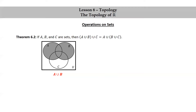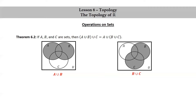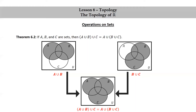For B union C, we shade both B and C. Coming from the left, if we take A union B and then union that with C, we proceed by shading in the rest of C. And if we look from the right, if we take B union C and then take A union that, we proceed by shading in the rest of A. In both cases you get the same picture — all of A, B, and C are shaded either way. So this gives really good evidence that this theorem should be true.